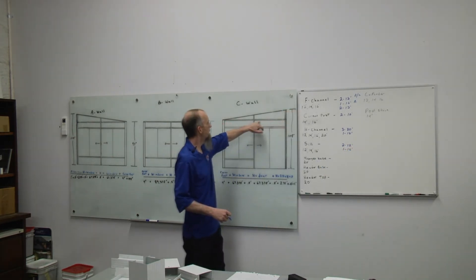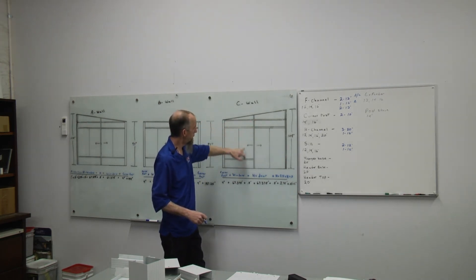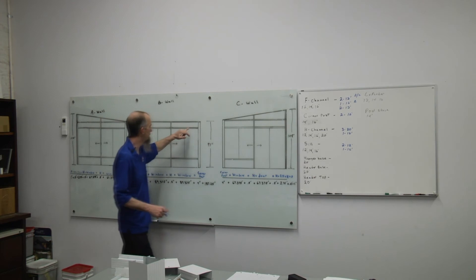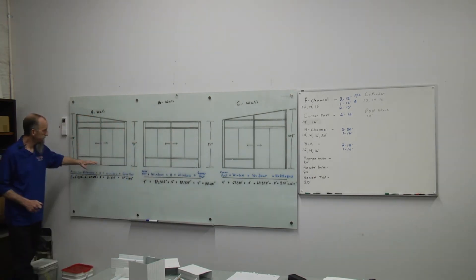We have our H channels that'll go above and below our window units and above our transom glass units on the A and the C wall. So a 12 foot H will give me these two pieces.